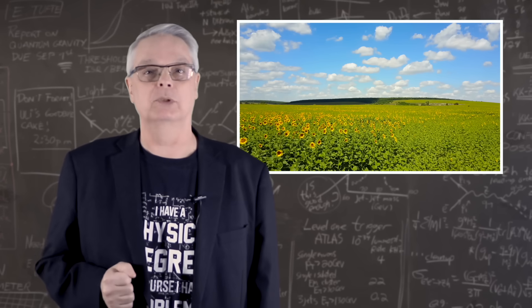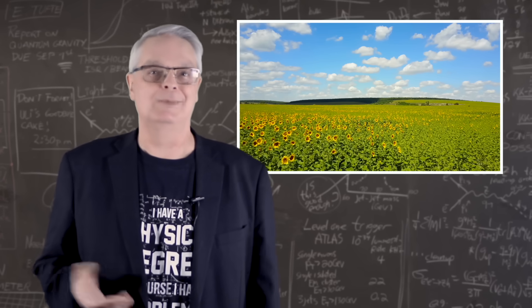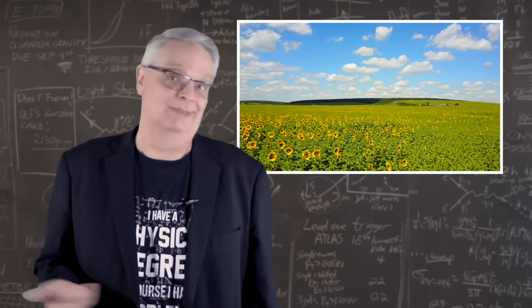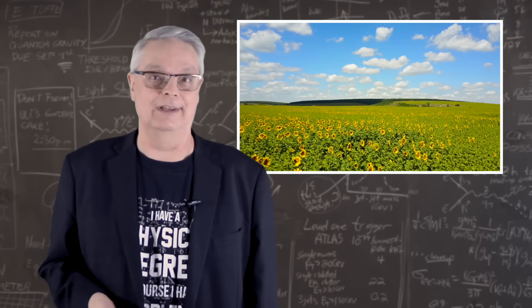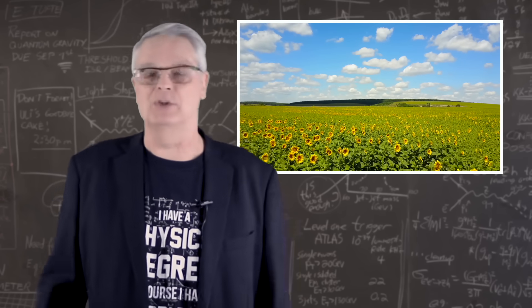Answering the question, why is the sky blue, is actually super simple. It's because the sun is out and it's not cloudy. Otherwise, the sky would be black or white or gray. Duh. Man, that was a short video.